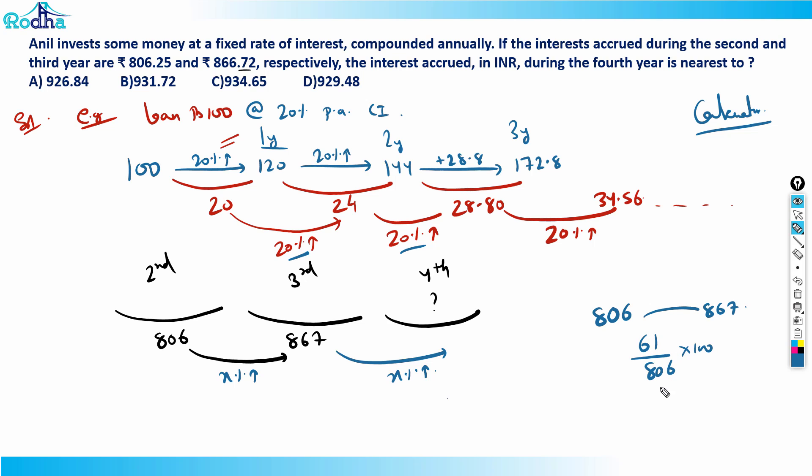So I'll say 806 to 867, what is the percentage increase here? Increase of 61 upon 806 into 100. It's roughly, I can say, if 10% is 80.6, roughly 81. So if 10 is 81, then you can move in multiples. We have 61 here. If 10 is 81, obviously 5 will be 40, and then 7.5 will be 60. So I can say that it's roughly an increase of 7.5%.